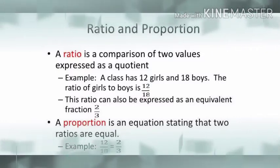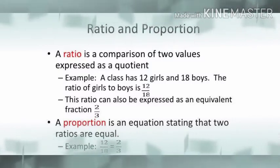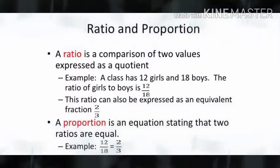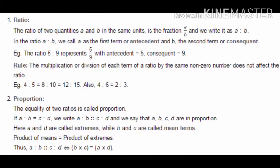Ratio is a relation of one value divided by another, and proportion means the relation between two such ratios. In a ratio of a to b, we write it as a fraction a/b or as a:b. The first term 'a' is called the antecedent and the second term 'b' is called the consequent.